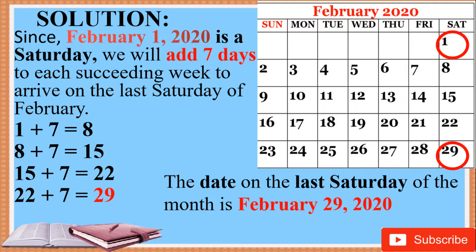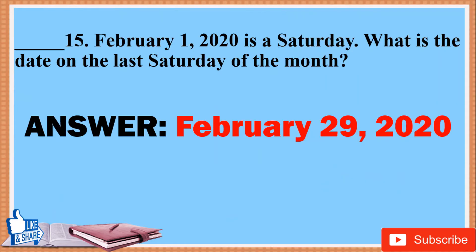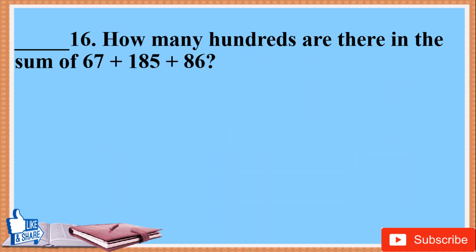Since February 1, 2020 is a Saturday, we will add seven days to each succeeding week to arrive at the last Saturday of February: 1 + 7 = 8, 8 + 7 = 15, 15 + 7 = 22, 22 + 7 = 29. The date on the last Saturday of the month is February 29, 2020. Answer: February 29, 2020.